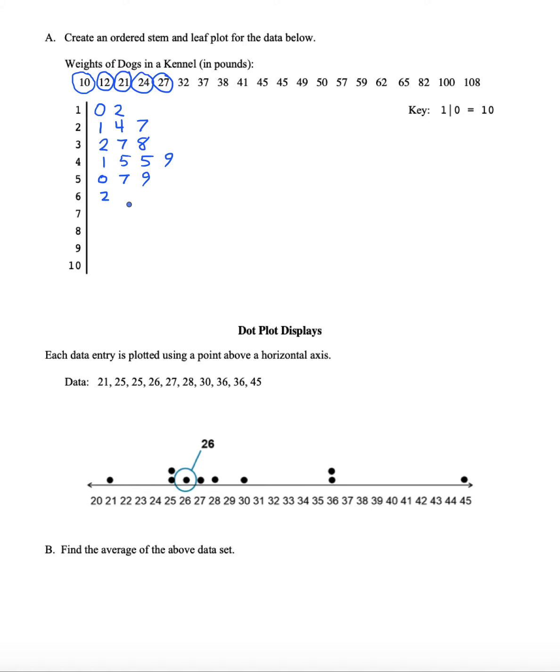59, 62, 65. I see there are no 70s so we'll skip that. We have 82, no 90s, and then we have 100.